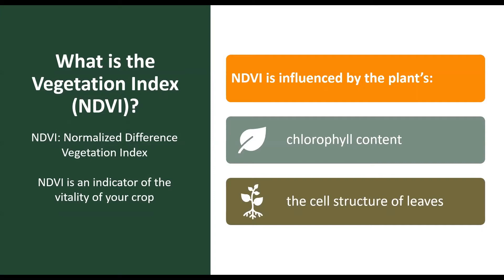A high index means healthy and strong growing vegetation. NDVI is influenced by the plant's chlorophyll content and the cell structure of leaves.